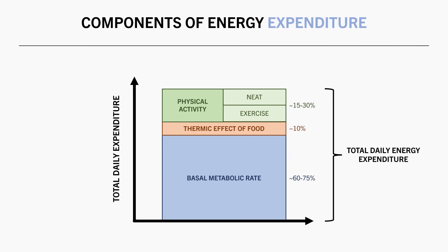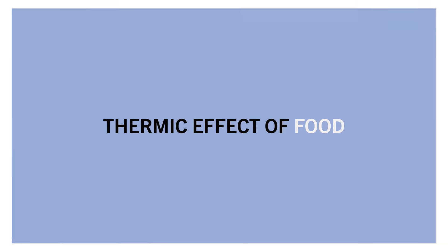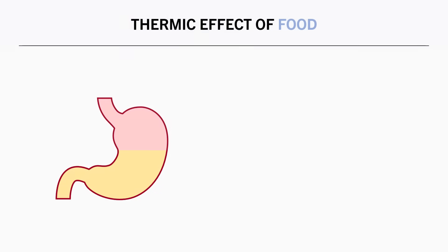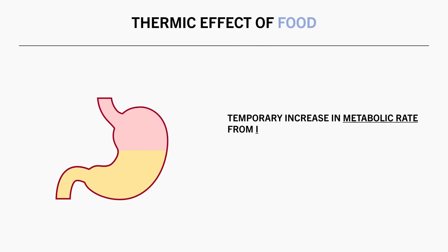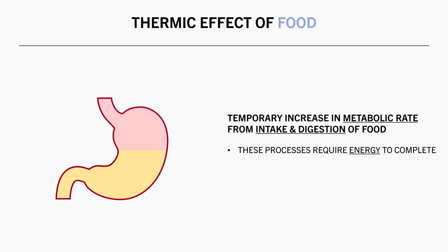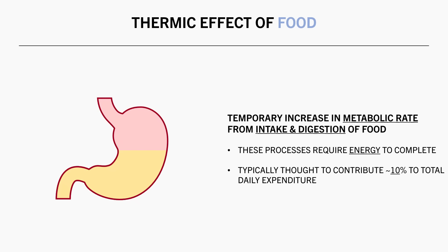Second, we have the thermic effect of feeding. This refers to an increase in our metabolic rate occurring from the intake, digestion, transportation, and storage of food that we eat. These processes require energy to complete, so our metabolic rate increases a little as a result. The thermic effect of feeding is typically considered to contribute around 10% to total daily energy expenditure for most typical diets.